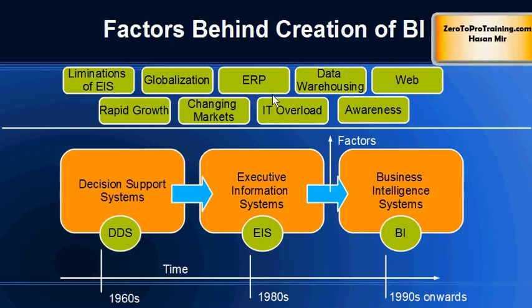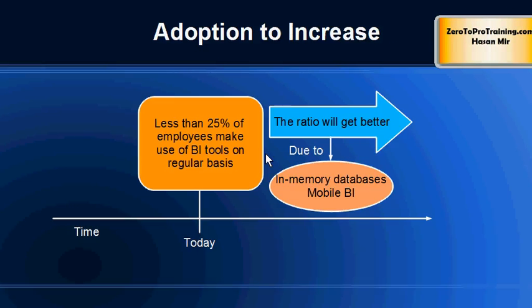Silos no longer worked — like with Decision Support Systems, and even Executive Information Systems. Even though EIS would combine information from some sources, the back-end databases were still separate, which created problems in providing true business intelligence to users. The term 'business intelligence' entered the scene in this sense in the 1990s.